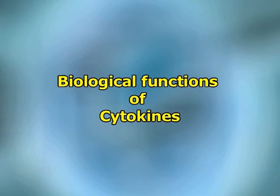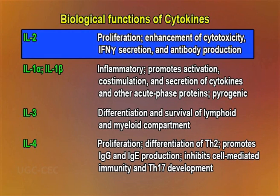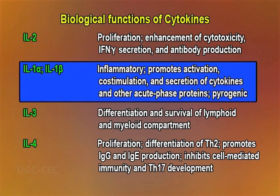Cytokines are involved in a broad array of biological activities including innate immunity, adaptive immunity, inflammation, and hematopoiesis. Interleukin 2 is related to proliferation, enhancement of cytotoxicity, IFN-gamma secretion, and antibody production. Interleukin 1 alpha and interleukin 1 beta are involved in inflammatory responses, promote activation, co-stimulation, and secretion of cytokines and other acute phase proteins, and are pyrogenic.